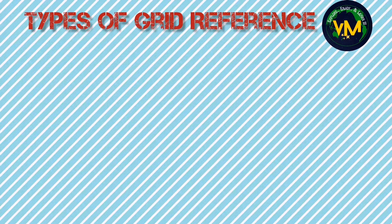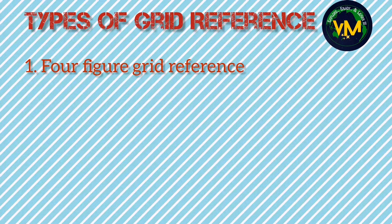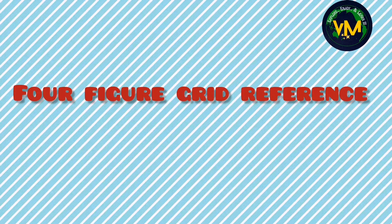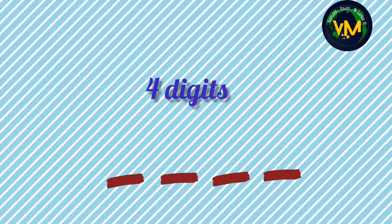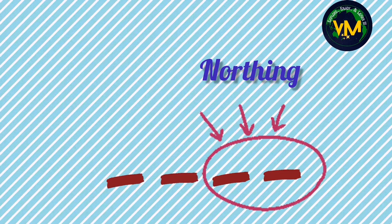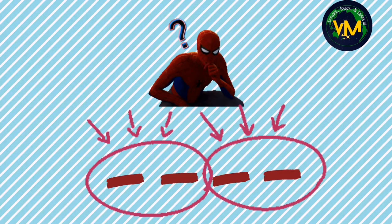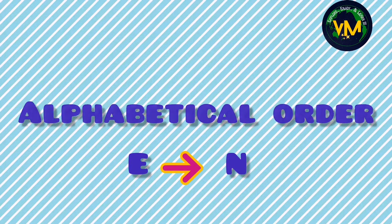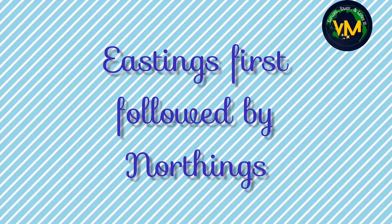Now we have two types of grid reference. The first one is four-figure grid reference, which we are going to see in today's video. The next one is six-figure grid reference, which we will see later in the next video. For calculating the four-figure grid reference of a place, we need four digits. The first two numbers will always be the easting and the next two numbers will always be the northing. To remember which comes first: in alphabetical order, E comes before N. So eastings are written first, then northings.